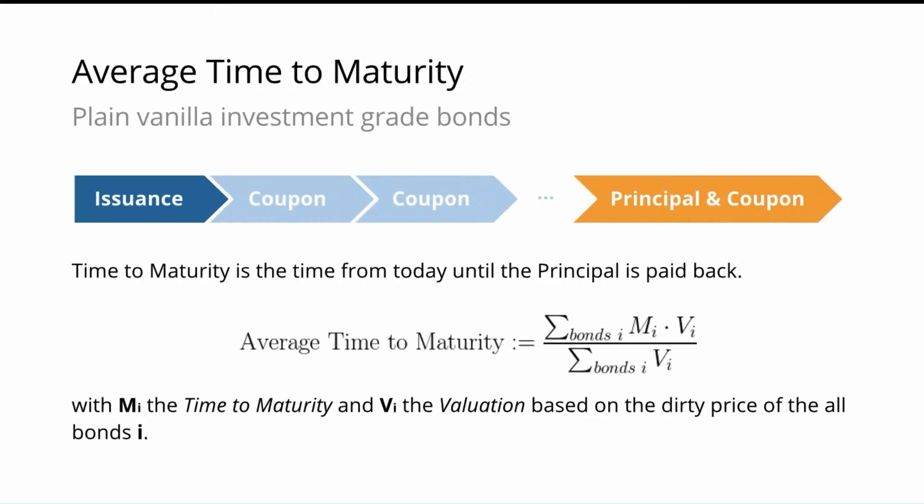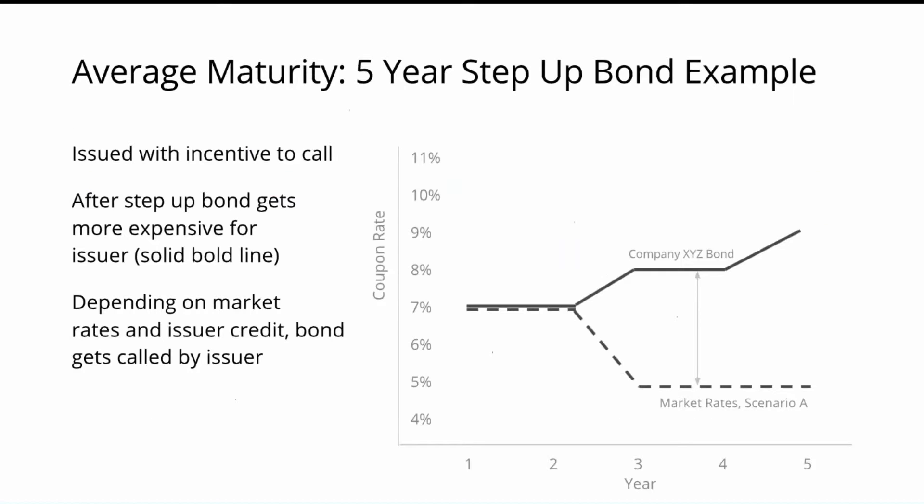Which kind of bonds make calculating the average maturity not really meaningful? Well, there are many bonds outstanding — either perpetual bonds that have no maturity at all, or hybrid securities that do have a maturity — that both have early redemption options, so-called call dates. Although a perpetual bond doesn't come with a clear maturity, these bonds usually can be redeemed at a certain point in time. The same is true for debt of financial institutions, which usually have the option — the issuer usually has the option — to redeem those bonds early.